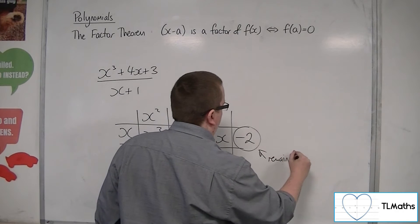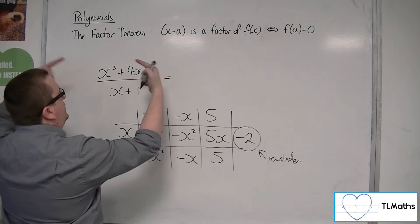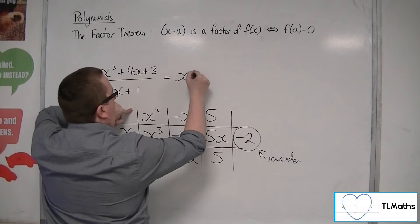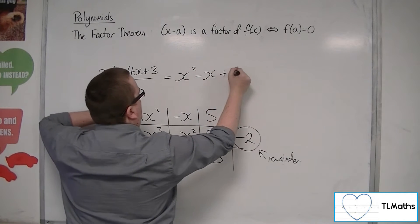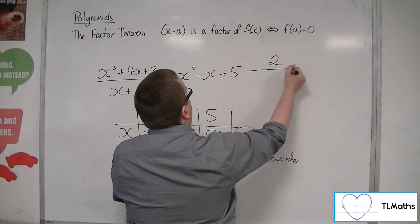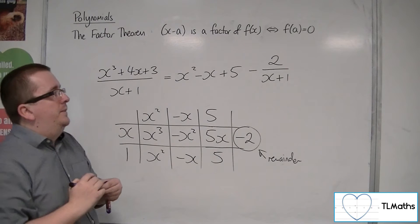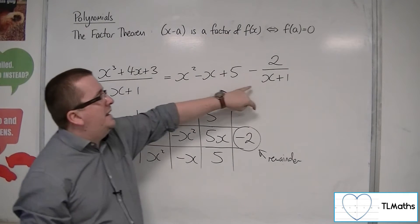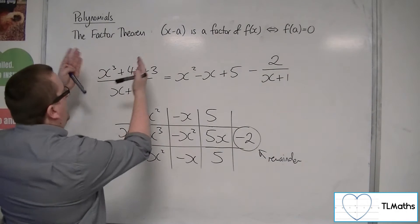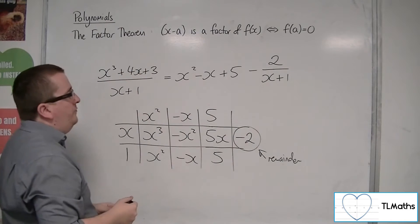So what I'm saying here is that when I divide this cubic by this linear function, I get x squared minus x plus 5, and this bit that didn't quite divide, that remainder that I didn't quite get to divide all the way through by x plus 1. So I can write this expression as this.